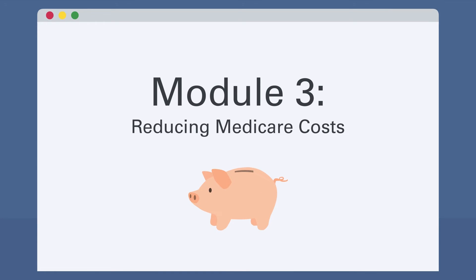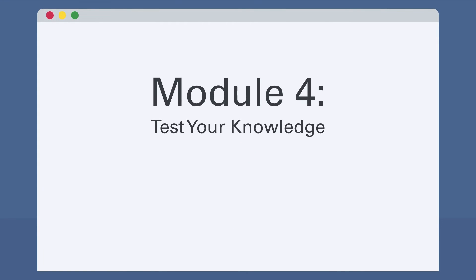Module 3 focuses on how to reduce Medicare costs and check for different Medicare plans and prices. In Module 4, learners will have another opportunity to test their knowledge from the previous module and take a look at Medicare premium costs in their areas.